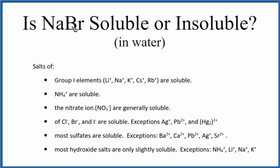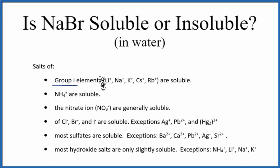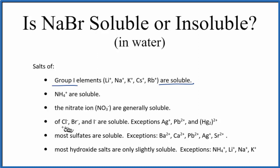There are two or three ways that we can know this. We can take a look at the solubility rules, and that will help us figure it out. As we look down at our rules, group one — so sodium is in group one — compounds with sodium are almost always soluble. We also have bromine in there; that's a halogen, and those compounds are usually soluble with a few exceptions. So this is going to be soluble according to the solubility rules.